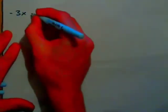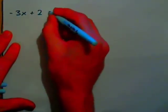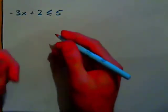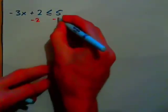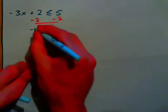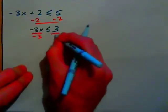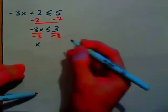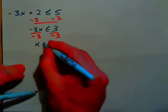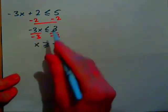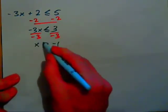Let's do some examples. If you had negative 3x plus 2 is less than or equal to 5 — just solve it like an equation. Subtract 2 from both sides: negative 3x is less than or equal to 3. Divide both sides by negative 3 — we divide by a negative, so the sign changes direction — giving x greater than or equal to negative 1.